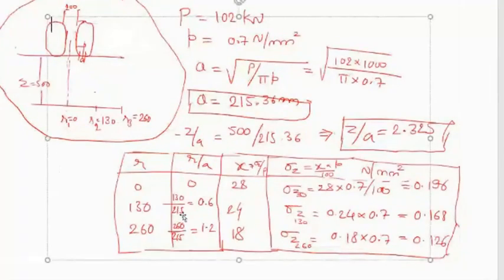R values are there. So R by A chart and Z by A. For that we need to refer the chart.